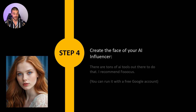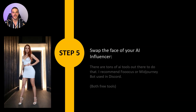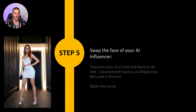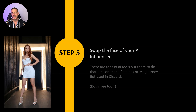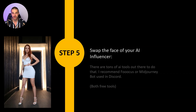In step four, we create the face of our influencer. There are also plenty of tools out there — I recommend Fooocus, which is how I do it, and you can run it with a free Google account. In step five, we do the face swap. I recommend doing it with Fooocus or with the Midjourney bot in Discord — both are free tools that cost you nothing and achieve great results. As you can see, we switch the face of our influencer, and this is very important because the body can vary a little bit between different generations, but the face always has to look exactly the same, because this is essentially the brand you're creating.